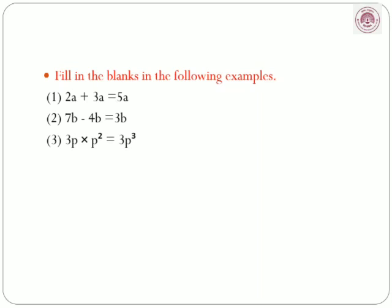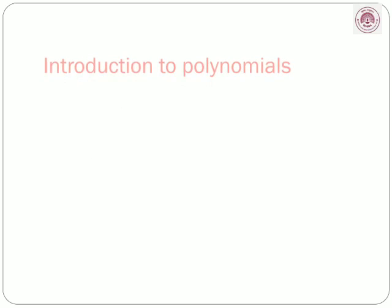Third question: 3p into p squared. The coefficient of p squared is 1, so 3 into 1 is 3, and p into p squared is p cubed. Therefore 3p into p squared is equal to 3p cubed. Next: 5m squared into 3m squared — 5 into 3 is 15, m squared into m squared is m raised to 4, so 5m squared into 3m squared is equal to 15m raised to 4.